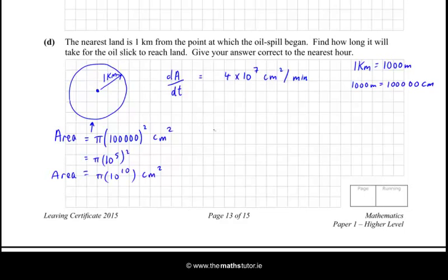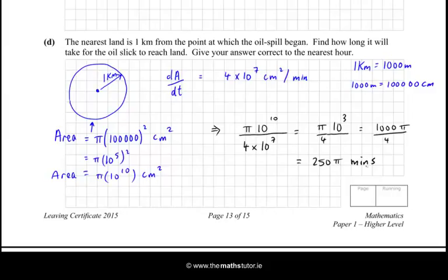We divide this area, pi by 10 to the power of 10, by the rate 4 by 10 to the power of 7. We get pi over 4 times 10 to the power of 3, because we subtract the powers. That is 1000 pi over 4, which is 250 pi, and that's in minutes. Multiplying 250 by pi gives 785.398 minutes. Dividing by 60 gives 13.09 hours, and to the nearest hour that is approximately 13 hours. So that's how long it takes for the oil to reach land.